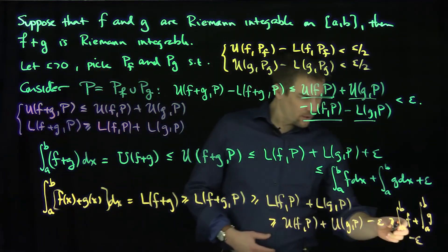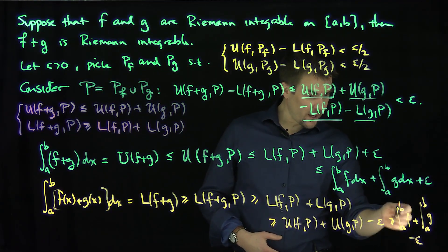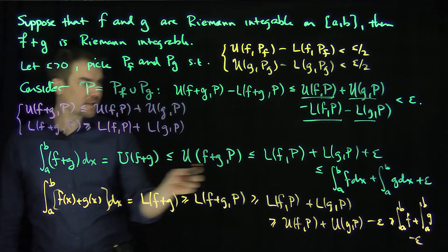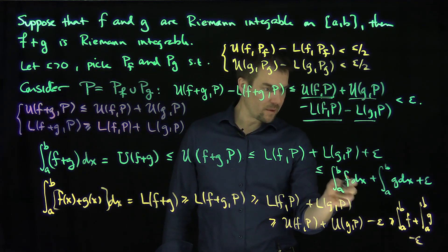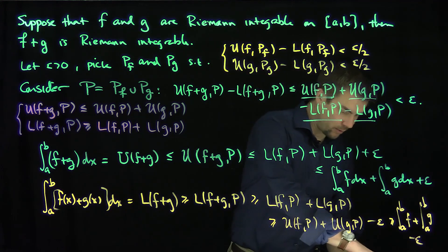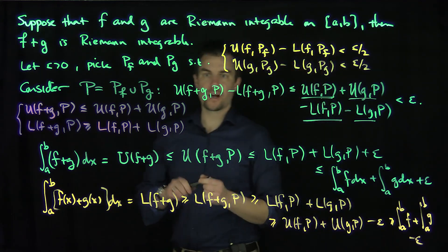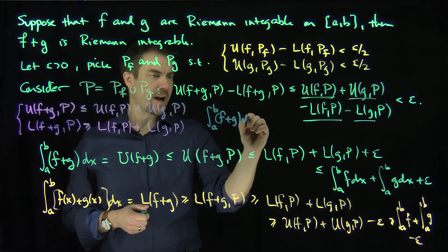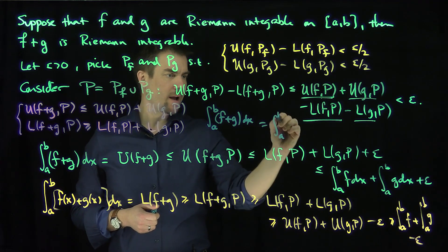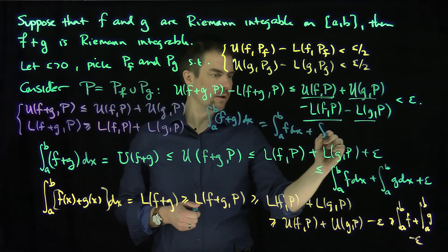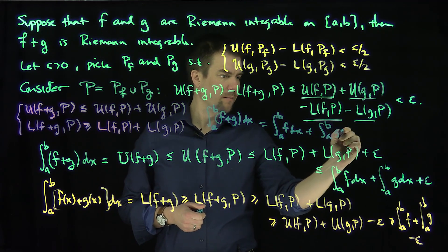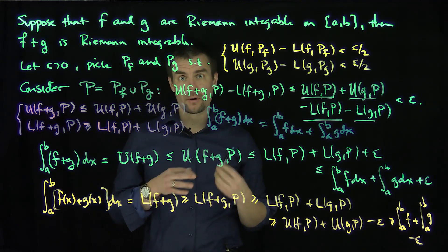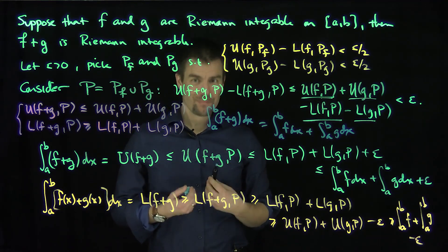So for any epsilon, we have that the integral from a to b of f plus the integral from a to b of g is less than or equal to the integral from a to b of (f+g), and that is less than or equal to the integral from a to b of f plus the integral from a to b of g. Our conclusion is not only that f plus g is integrable, but that the integral from a to b of (f+g) dx equals the integral from a to b of f dx plus the integral from a to b of g dx. This shows that the sum of two Riemann-integrable functions is integrable, and the integral of the sum is the sum of the integrals. Thank you very much.